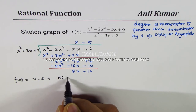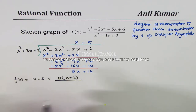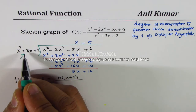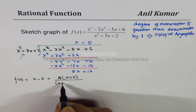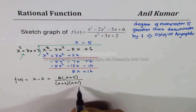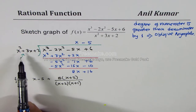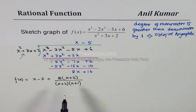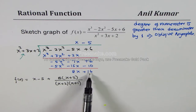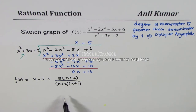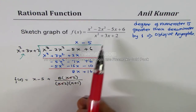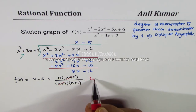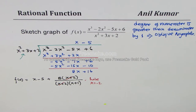Taking 8 common from the remainder gives 8(x + 2), divided by the divisor x² + 3x + 2. Now x² + 3x + 2 can be factored — product 2, sum 3 — as (x + 2)(x + 1). Notice that x + 2 is a common factor in both numerator and denominator, so that gives us a hole at x = -2.